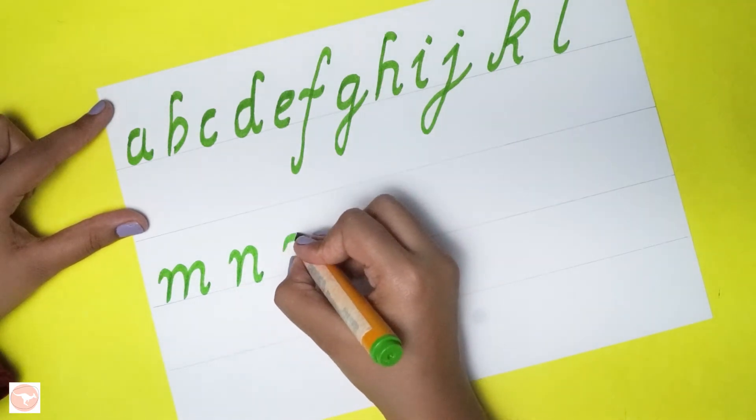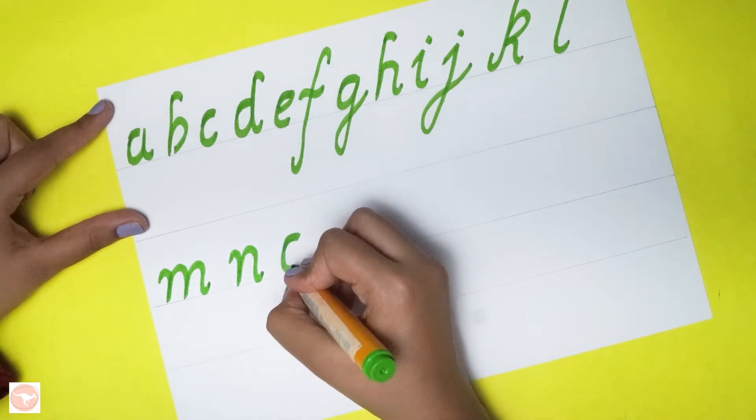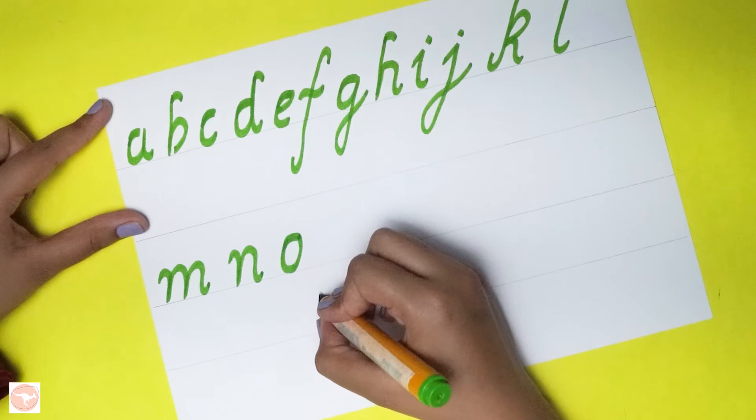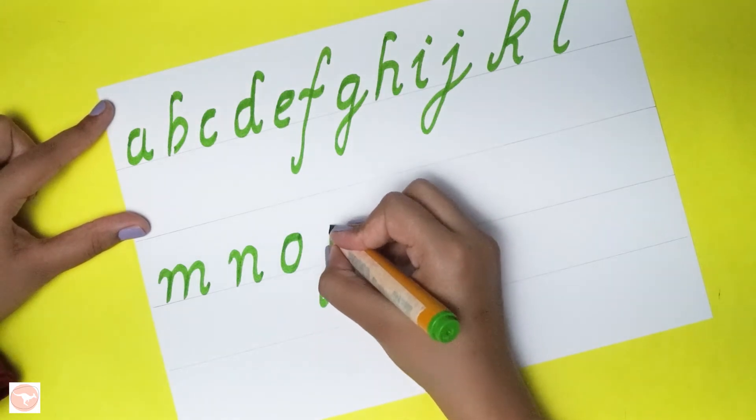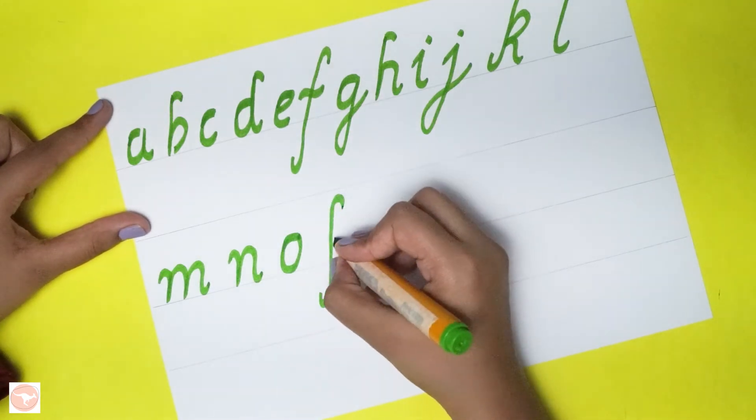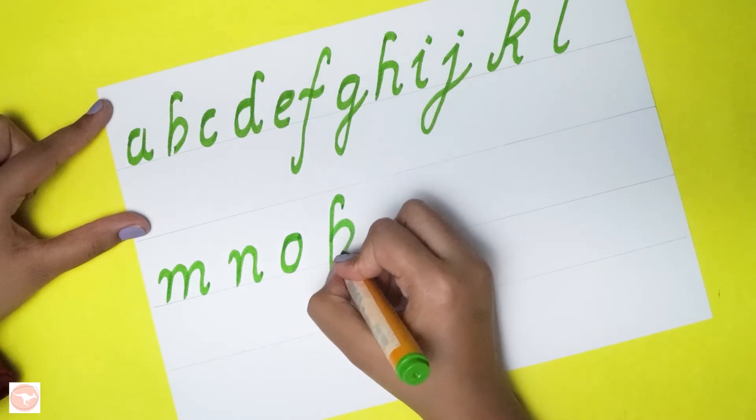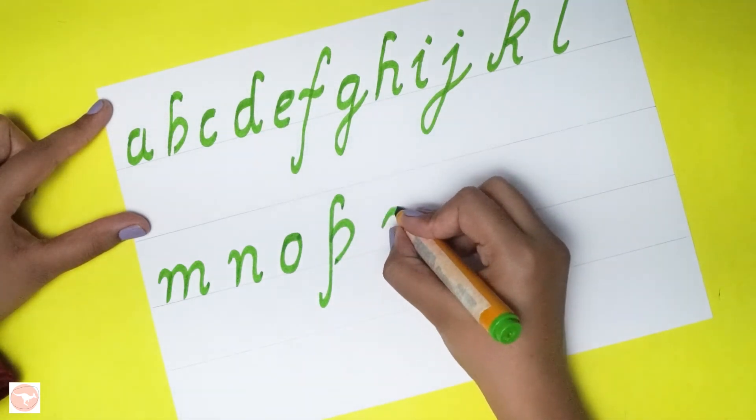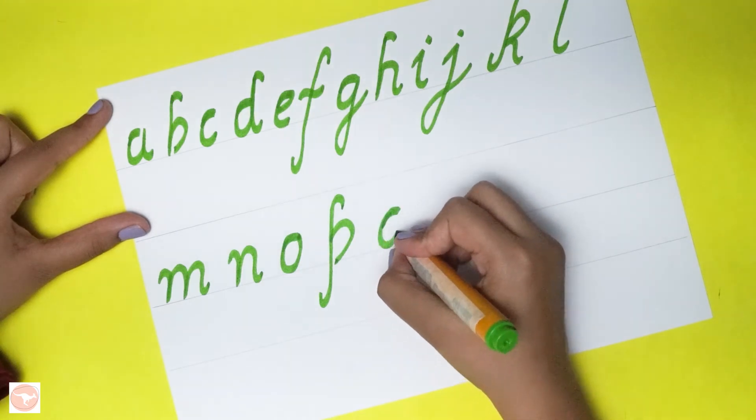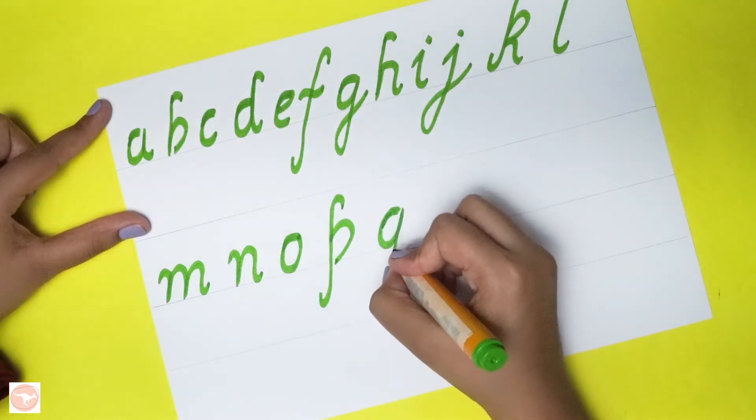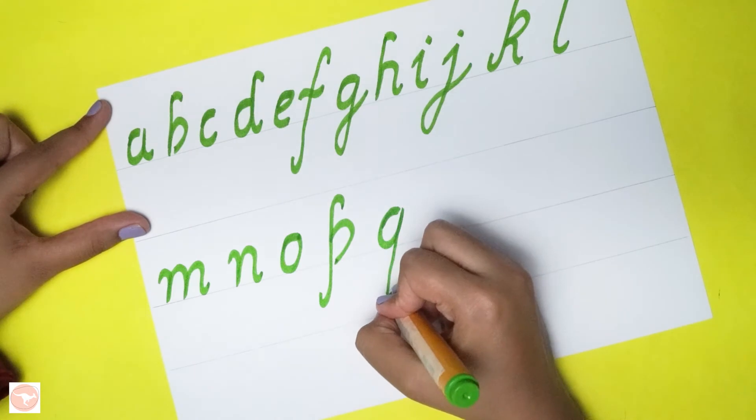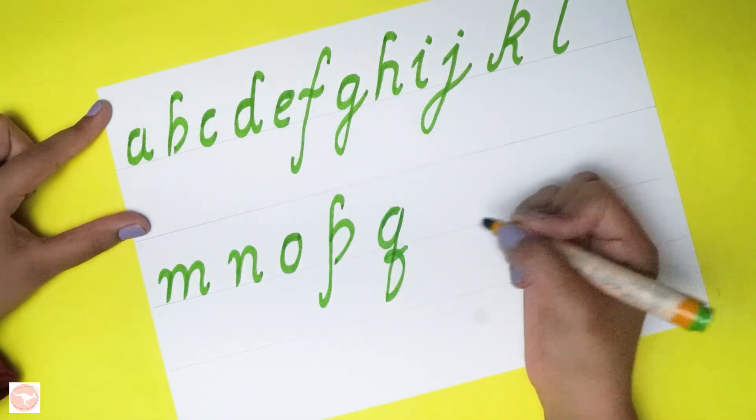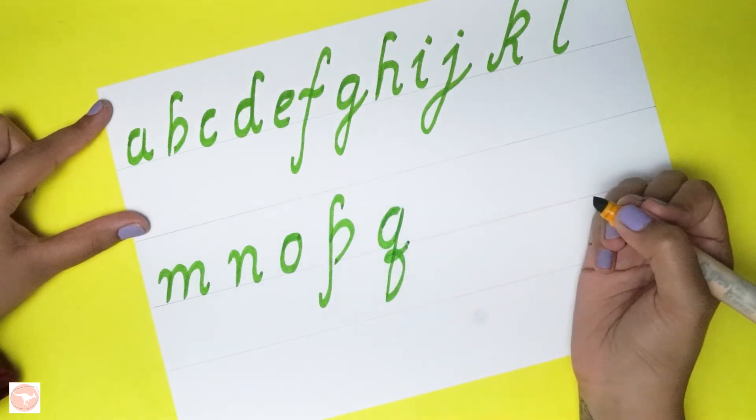Now for O, again that stroke. For P, long like F. Now for Q again, we have to start with that stroke. From here we have to come back straight, we have to go back in a small stroke here, like this.